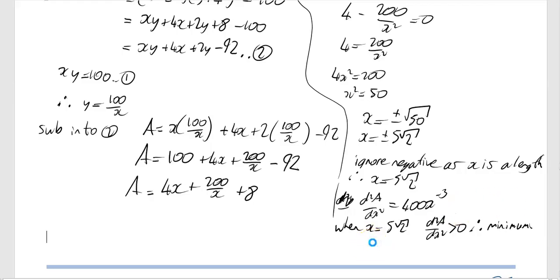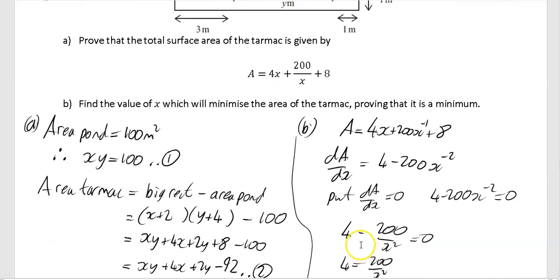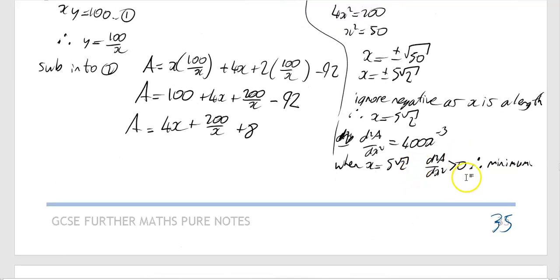Let's check: have we answered the question? 'Find the value of x which will minimise the area of the tarmac, proving it is a minimum.' We don't need to calculate the actual area — just always go back and read the question to make sure. That's us done on our differentiation notes and we're now ready to exercise.